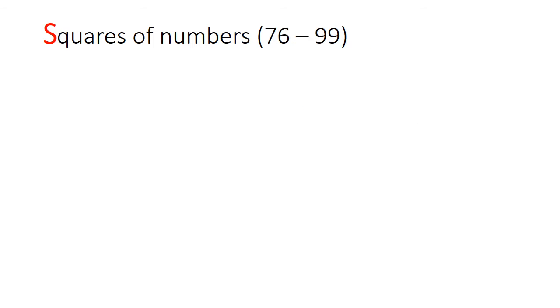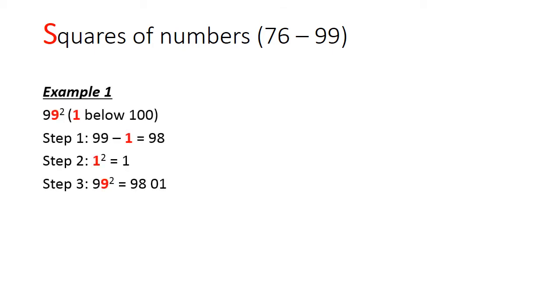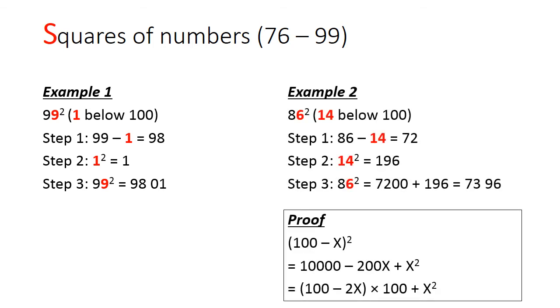For numbers between 76 and 99, we do the same. We double its distance from 100, but this time downward. Like in the example of 99 squared, since 99 is 1 below 100, we will subtract an additional 1 from 99 to get 98, and we will square the 1 to get 1. However, since 1 is a single digit number, we need to add a 0 in front of the 1 to make it a two digit number. So 99 squared will be 9801. Here's the second example and a proof.